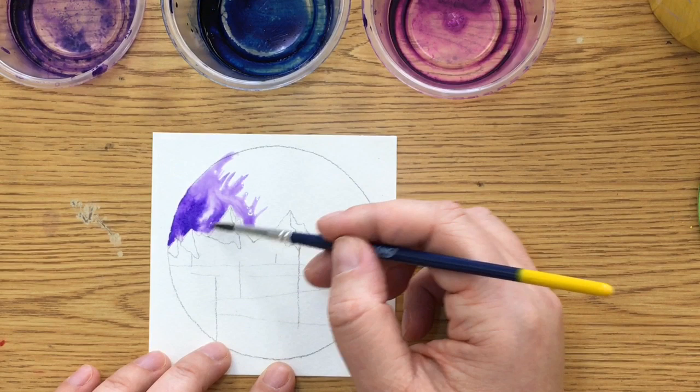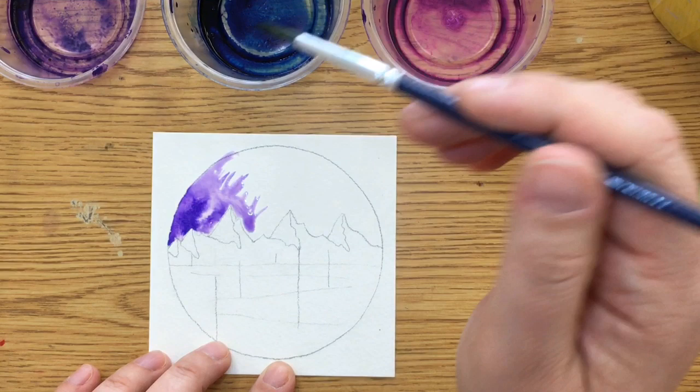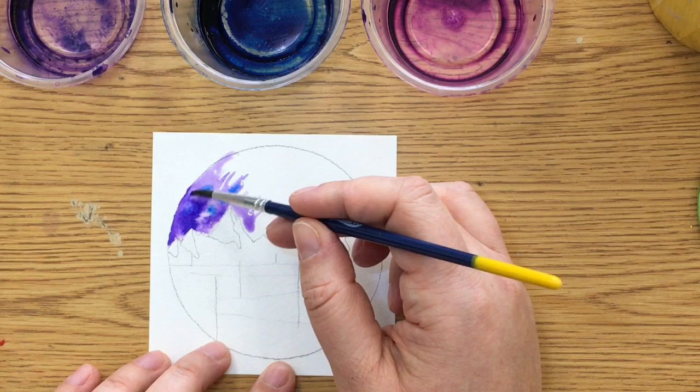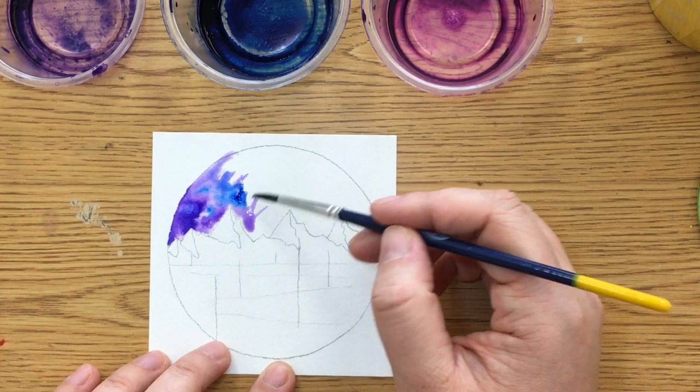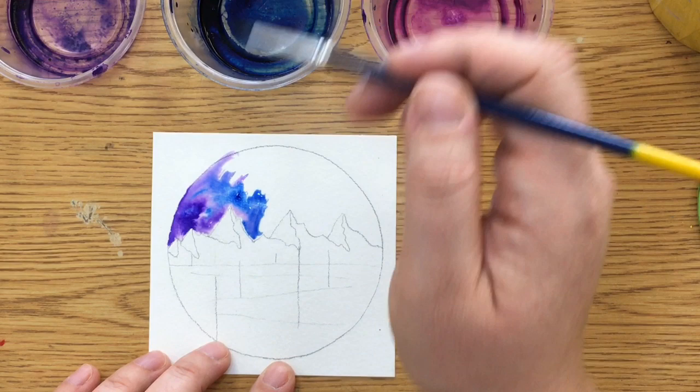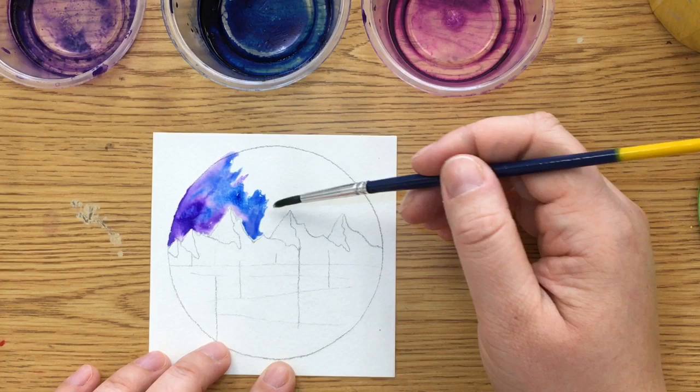Now I'm going to switch to a different color. I'm going to switch to the blue. Just dipping the tip in and just doing little touches with the tip of my brush, and because we're doing—oh look at that—because it's touching a color that's already wet, it's getting those cool little mixes happening.